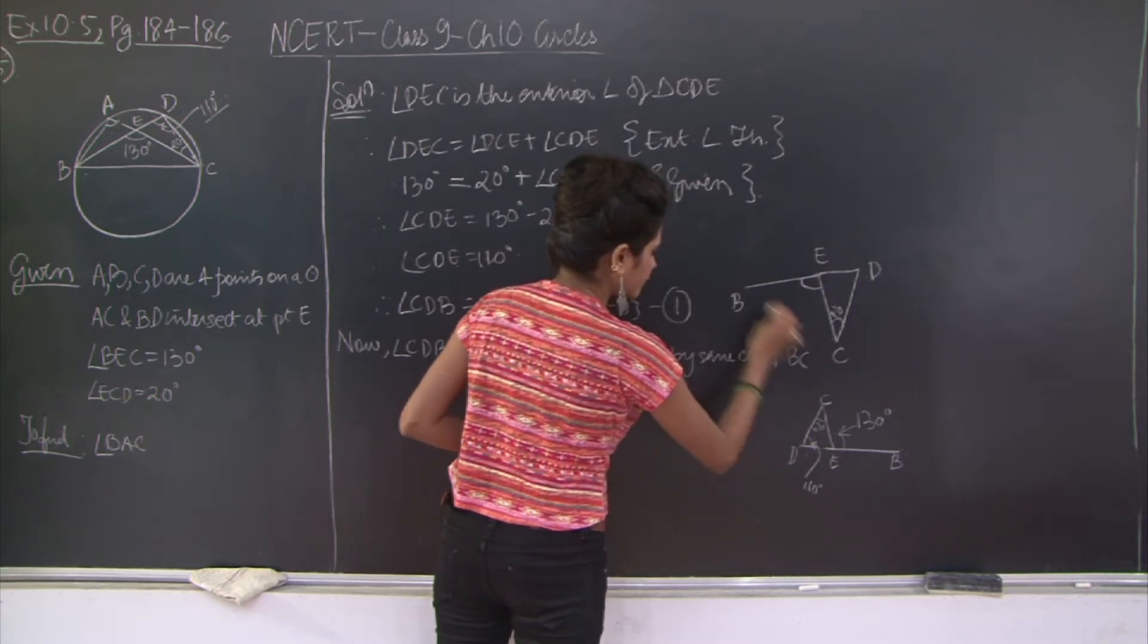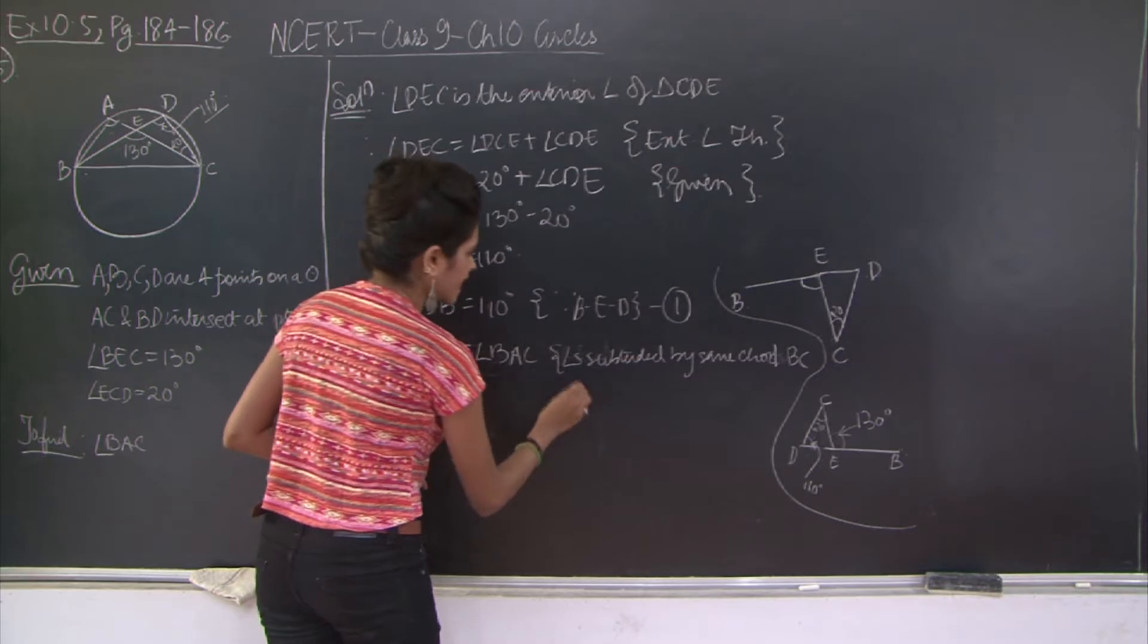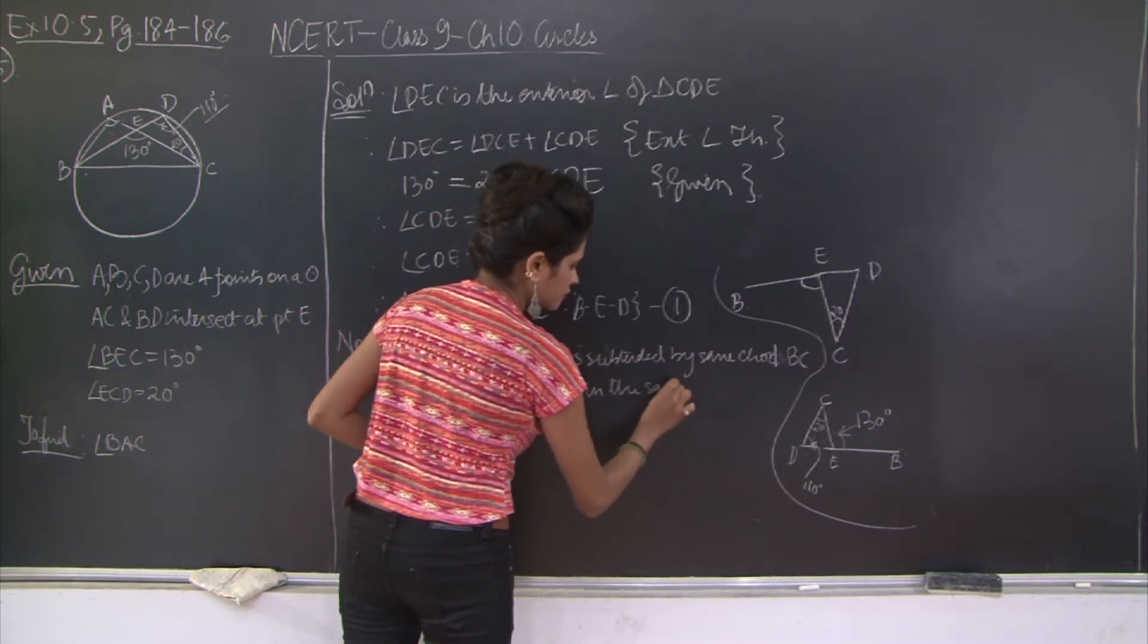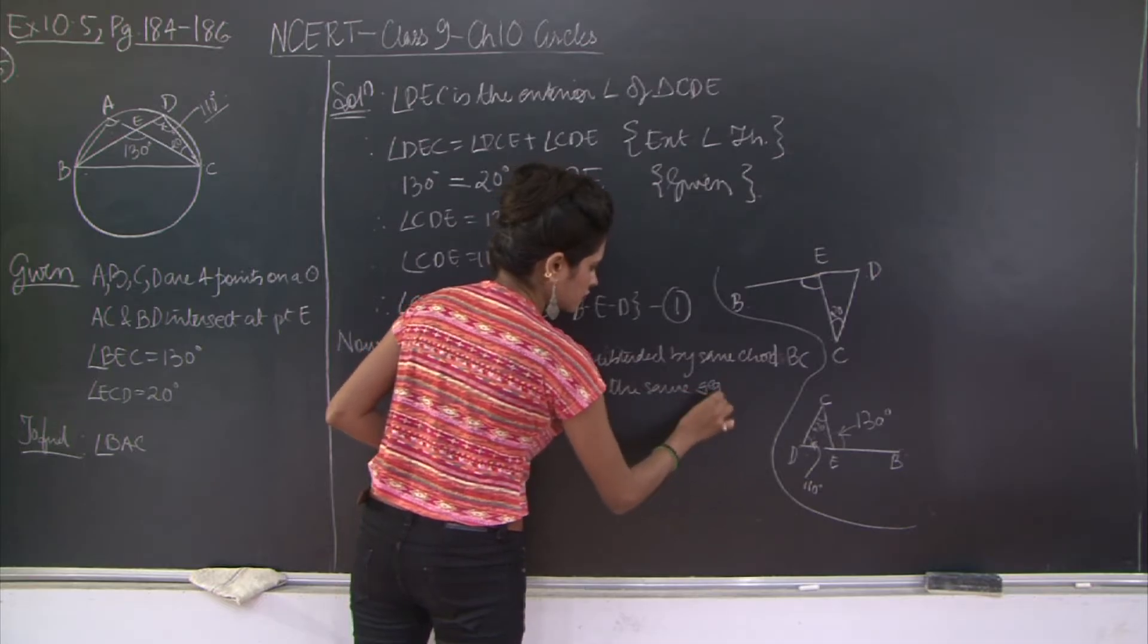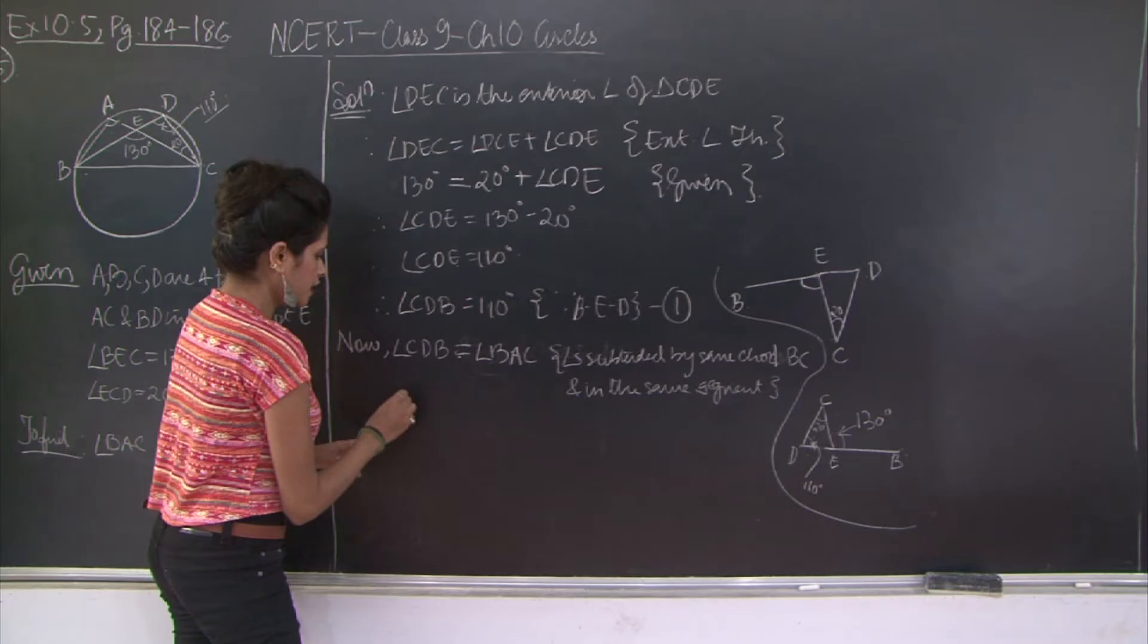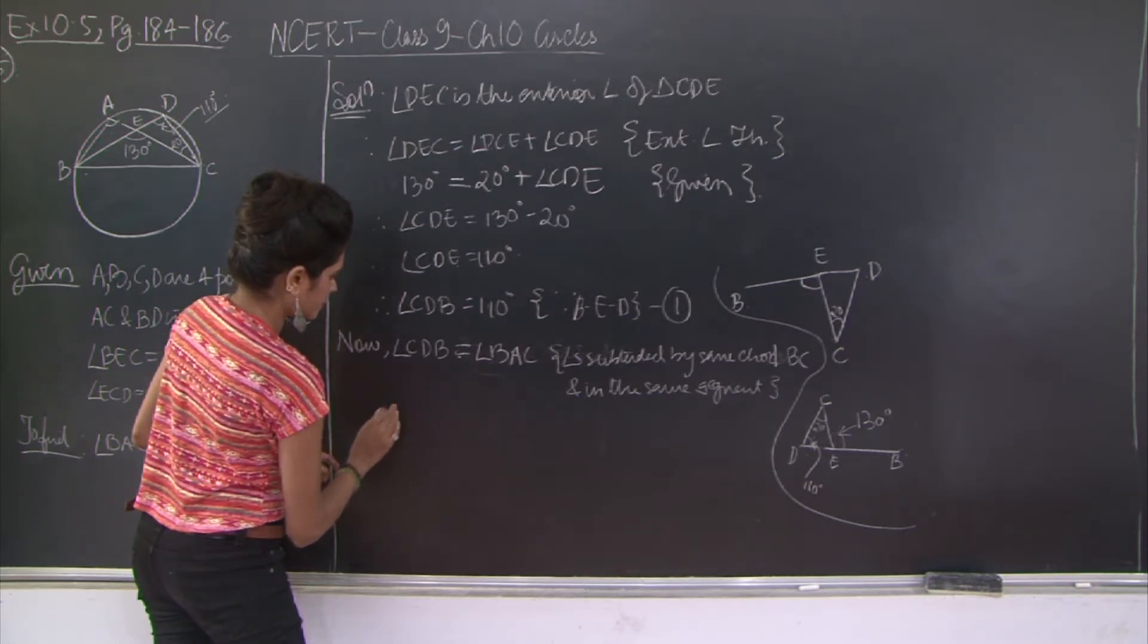Because they are the angles subtended by same chord. Which is the same chord? It is BC. Same chord BC and in the same segment.